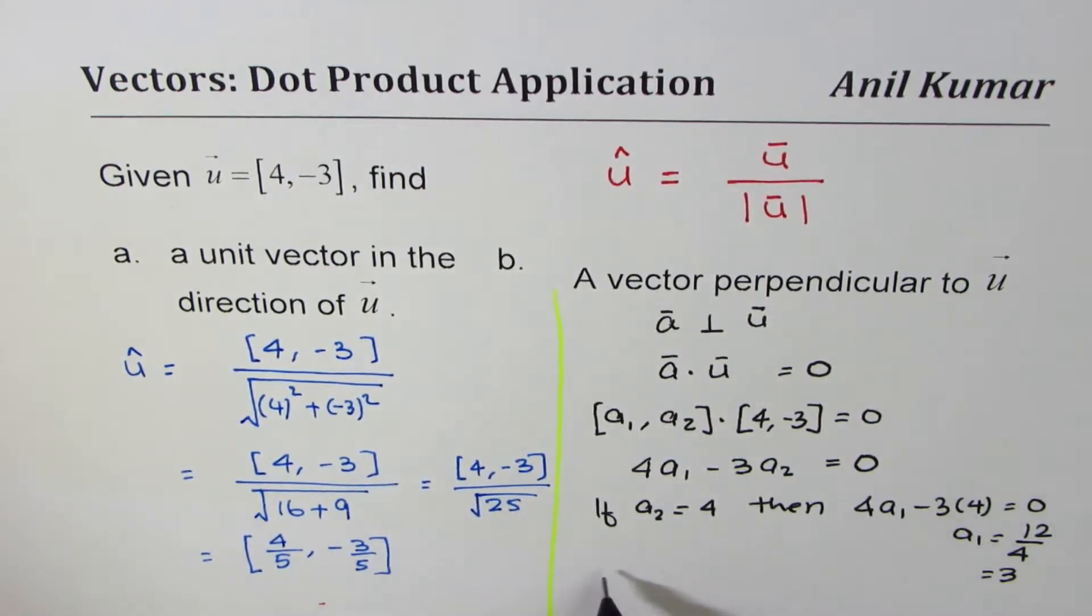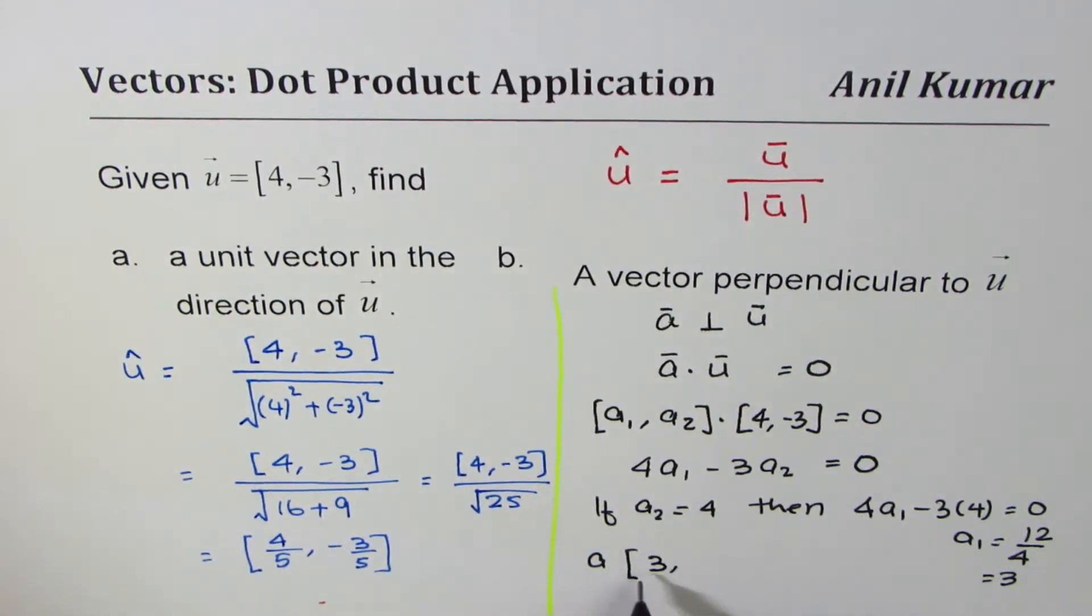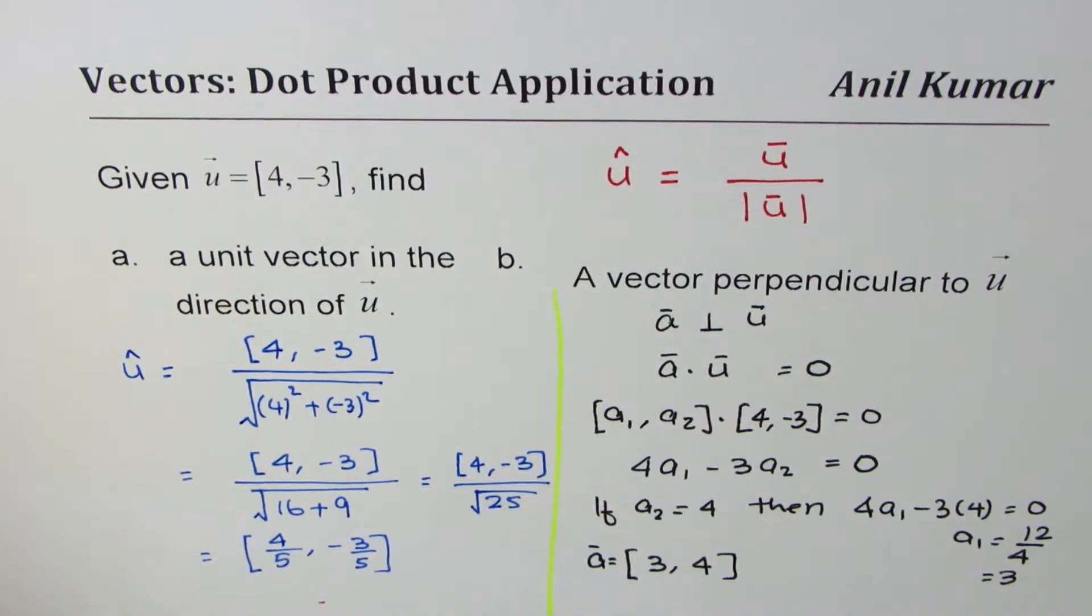So we get the vector a as a₁ = 3 and a₂ = 4. That's how you can get the perpendicular vector.